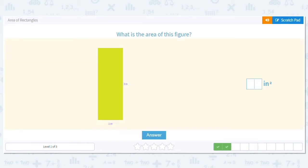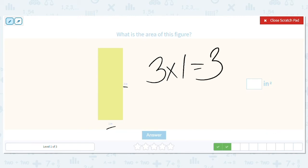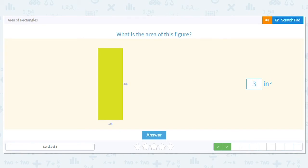Next one, we have three by one. So what would the problem be to find the area? Three times one. Three times one. Which equals three. So our area is three inches squared.